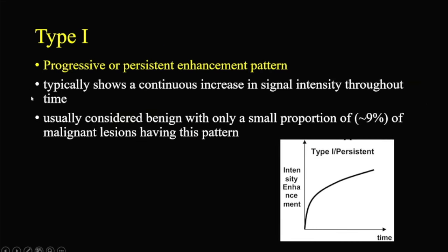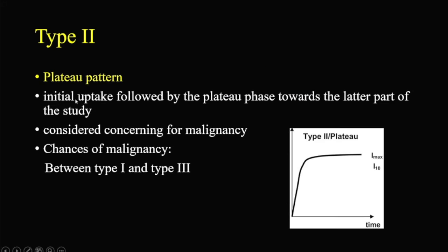There are three kinds of curves: Type 1, Type 2, and Type 3. Type 1 curve is slow increase and persistent enhancement, which is very common with benign lesions — only less than 9% of lesions with this curve are malignant. So Type 1 is towards benign entities. We use this for contrast-enhanced breast MRIs but it can be applied in other scenarios as well. Type 2 is the plateau phase — initial uptake followed by a plateau.